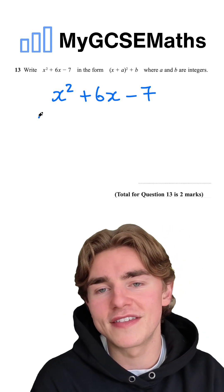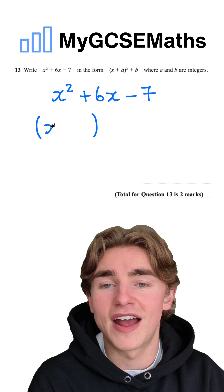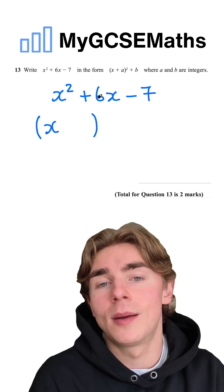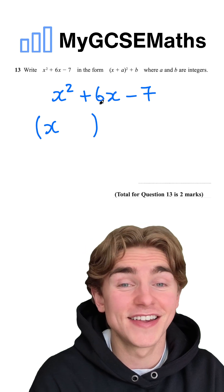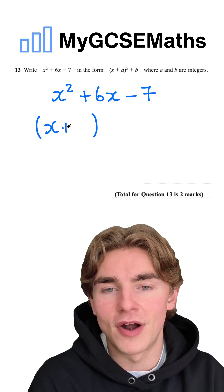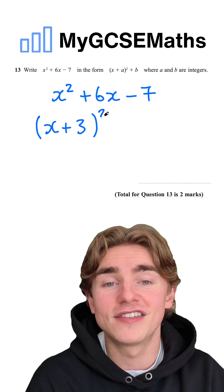Step number one, we're going to write out a pair of brackets and we're going to write an x at the front. Next step, we're going to look at the number next to the x. Here it's a 6. We're going to halve that to get 3. So we're going to write plus 3 in the brackets and then we're going to square those brackets.